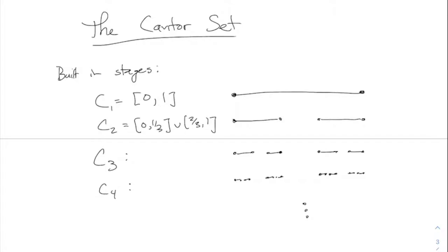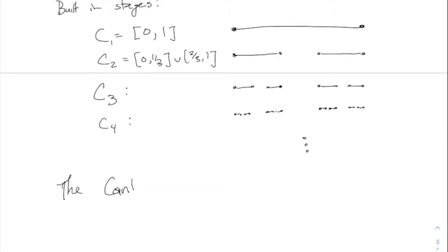The Cantor set C is defined as the intersection of all these intermediate stages C_1, C_2, C_3, and so on. This is like the nested intervals — not exactly intervals each time, but unions of intervals — and you take the intersection of all of them. That's the Cantor set.